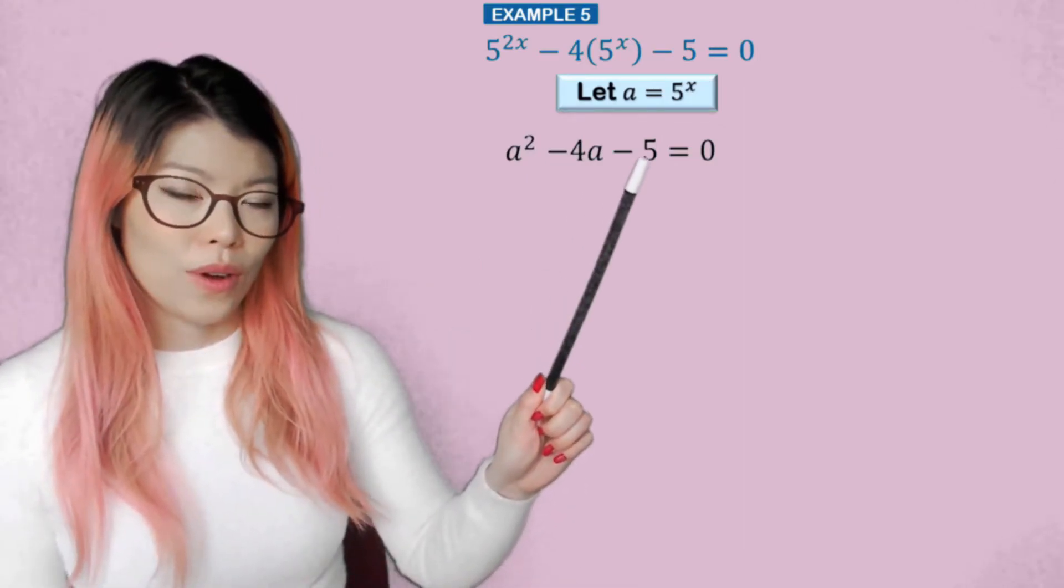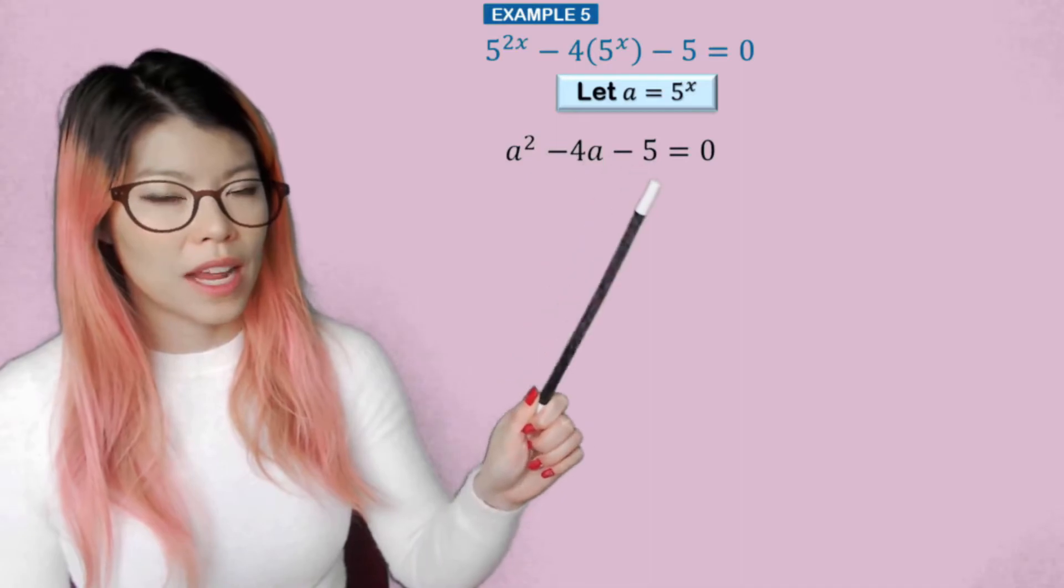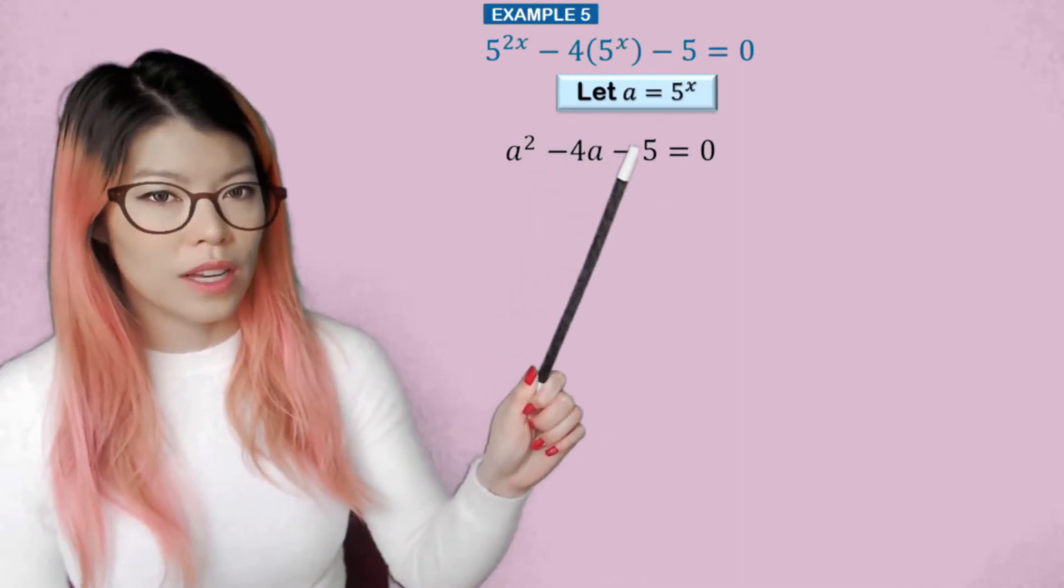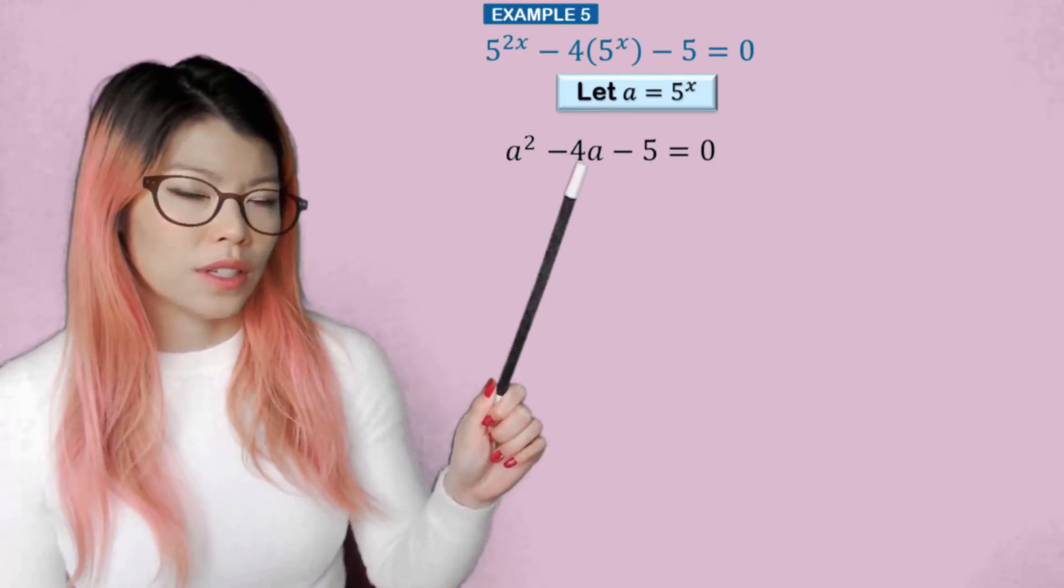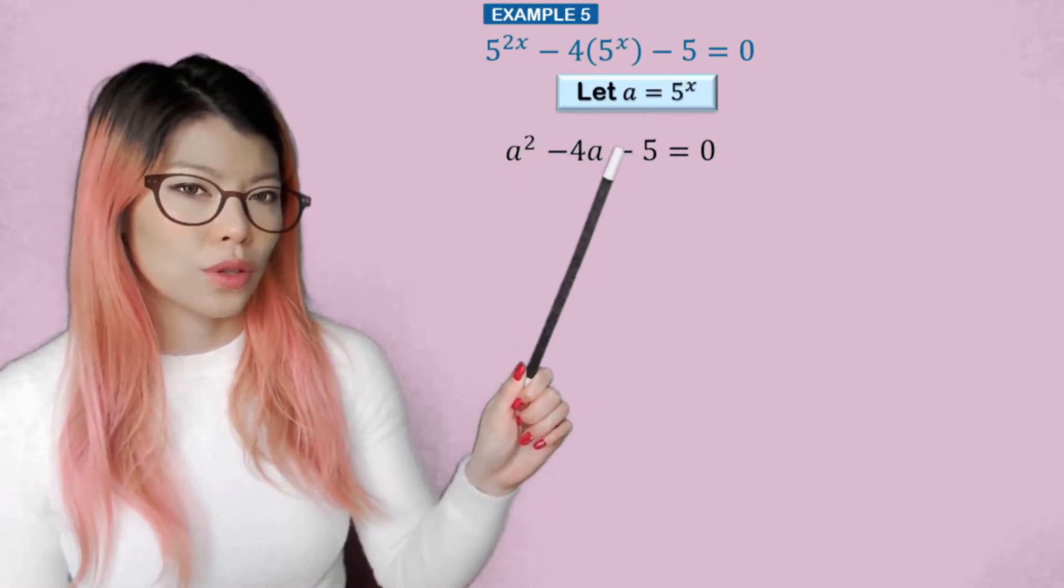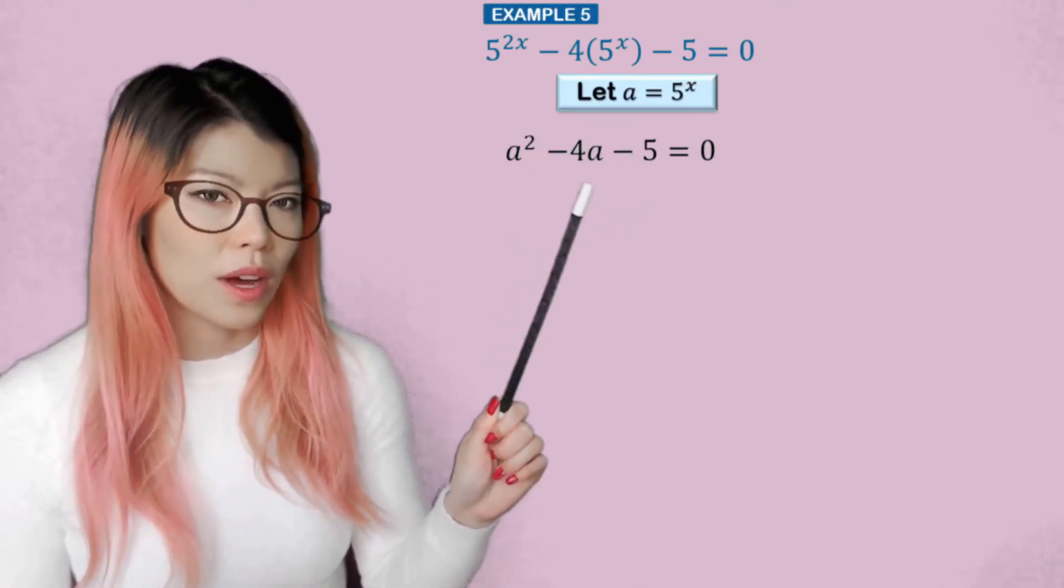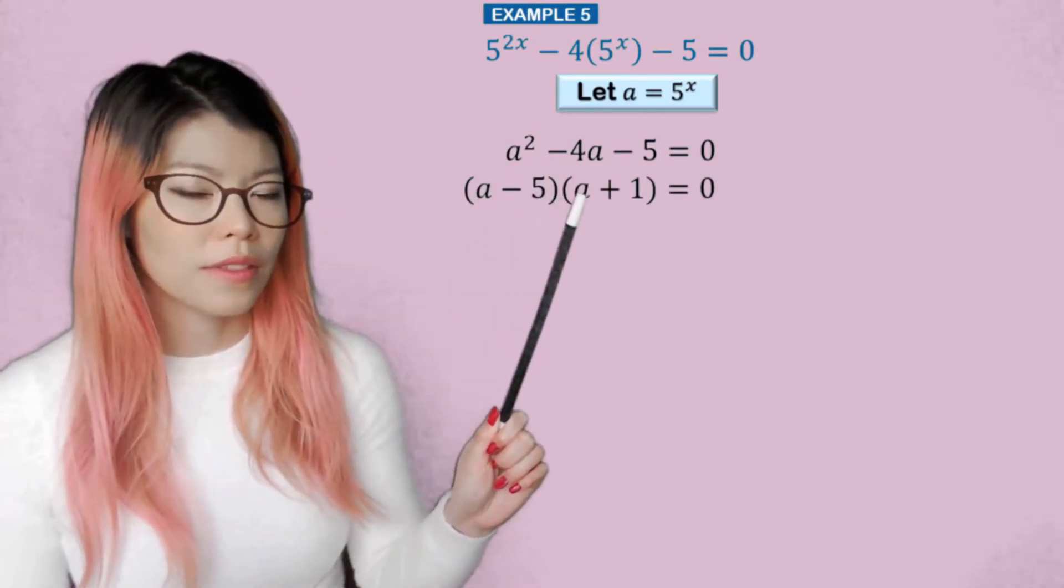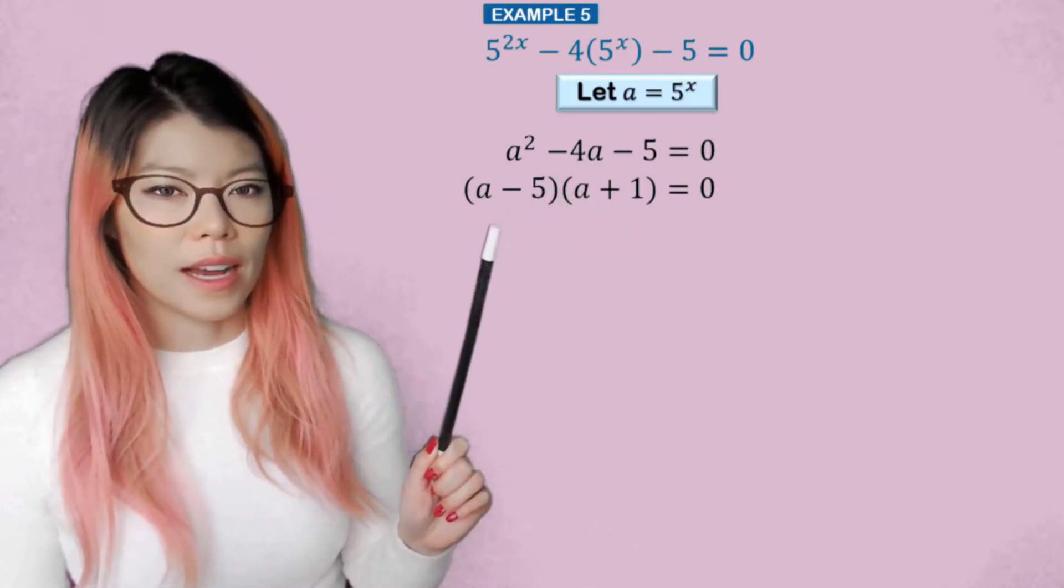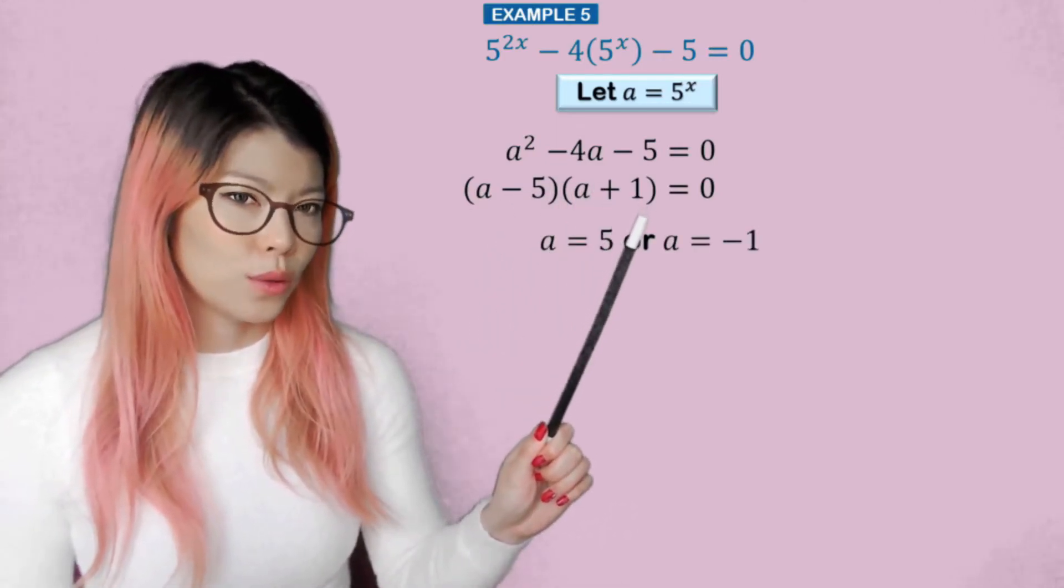So what times what is 5 and negative 5 and adds to negative 4? Well, 5 times 1, the difference is 4. So if we want negative 4, so negative 5 times positive 1 would give us the negative 4. So a minus 5 and a plus 1. Now a is equal to 5 or a is equal to negative 1.